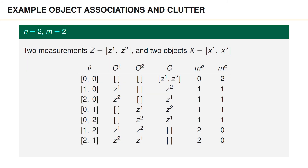Let's consider the example with two objects and two measurements again. In this table, the seven valid associations are listed. For each association, you can find the corresponding association to the object with state X1, the association to the object with state X2 — denoted O1 and O2 respectively — the set of clutter measurements given the association, and how many object detections and clutter detections there are. If you would like to study this table closely, you can pause the video now.